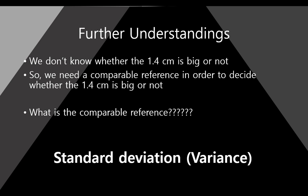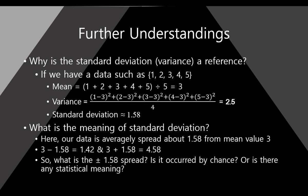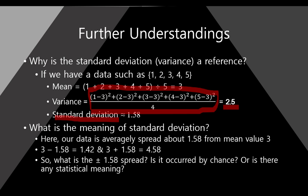Standard deviation and variance are the same concept. Let's get back to standard deviation. For example, if we have a dataset such as 1, 2, 3, 4, 5 — just 5 observations — the mean value is 3. The variance is calculated from this, and the number is 2.5. The square root of 2.5, which is the standard deviation, is about 1.58.